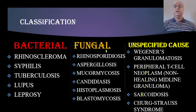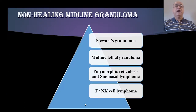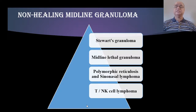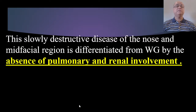Wegener's granuloma we already discussed in a previous video — the link is in the description box, and those main groups are also uploaded on my channel. Today we will talk about non-healing midline granuloma, also called Stewart's granuloma, synonymously known as midline lethal granuloma. Some people call it polymorphic reticulosis and sinonasal lymphoma because its picture resembles lymphoma, and it is also known as TNK cell lymphoma. These are different names used synonymously.